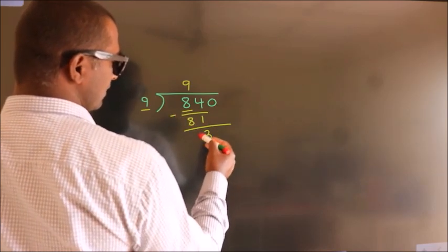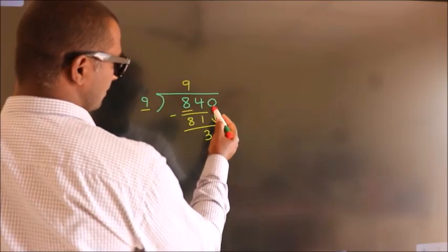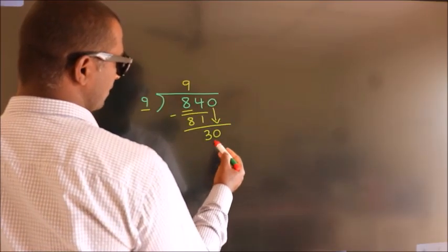After this, bring down the beside number. So 0 down, making 30.